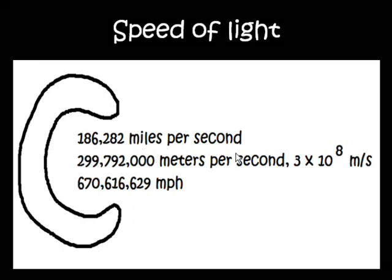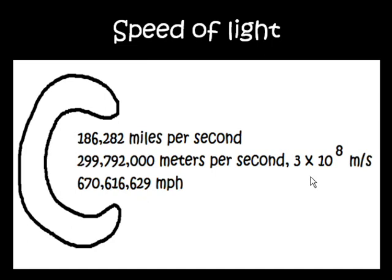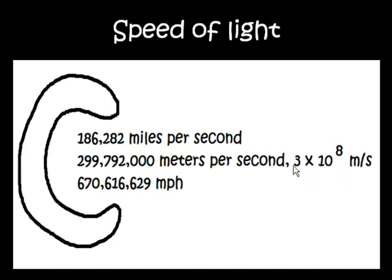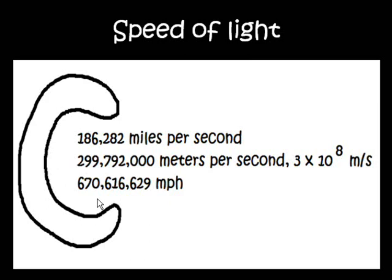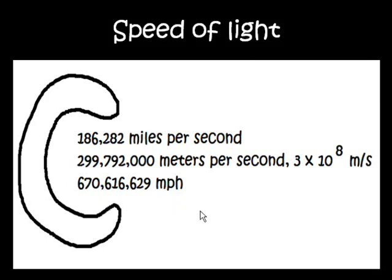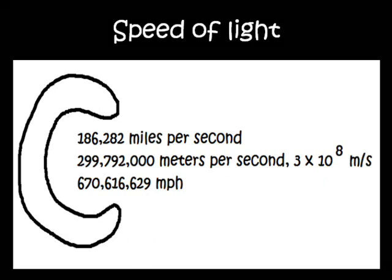So here's your miles per second value. And for calculations, especially in my high school class, we use 3 times 10 to the 8 meters per second. And 670 million miles per hour. That means light travels around the earth about 7 and a half times in one second. That's fast.